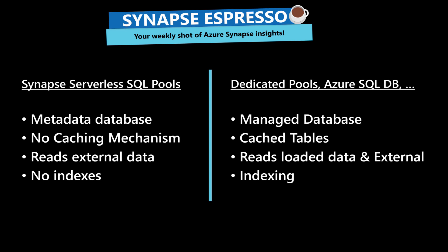In Synapse Serverless, as you do not really have a managed database, you don't have any indexes, so you cannot index those tables or do any of that performance tuning except for the best practices shown in previous videos. In Dedicated SQL pools and Azure SQL DB, you've got indexing, you've got caching mechanism, and you've got results set cache in Dedicated SQL pools, so they are a lot more friendly when you're doing frequent queries against them.